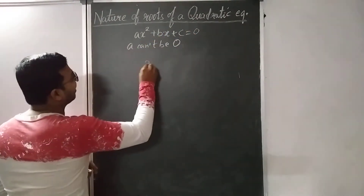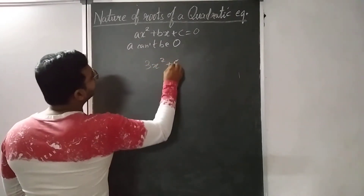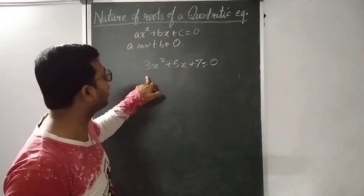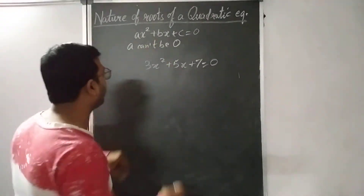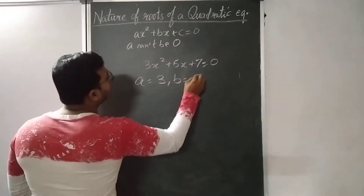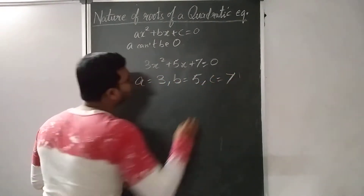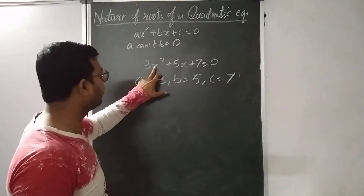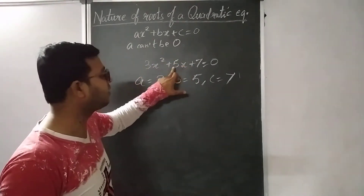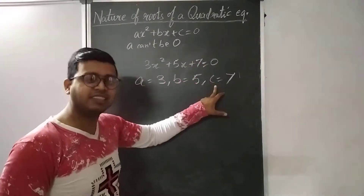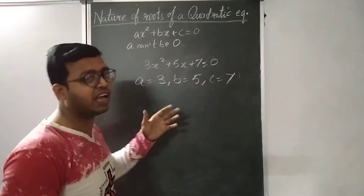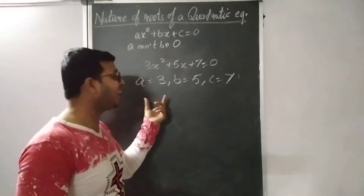If I write 3X² + 5X + 7 = 0 and compare this equation with the general form of a Quadratic Equation, then the value of A will be 3, the value of B will be 5, and the value of C will be 7, because the coefficient of X² is A, the coefficient of X is B, and the constant is C. Before finding the Nature of Roots, we have to understand how to find A, B and C.